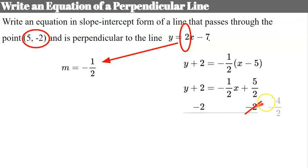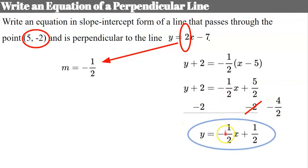To subtract 2, we need a common denominator, converting 2 to negative 4 halves. Combining terms: 5 halves subtract 4 halves is positive 1 half. So y equals negative 1 half x plus 1 half is the equation of a line perpendicular to y equals 2x minus 7 that passes through the point 5, negative 2.